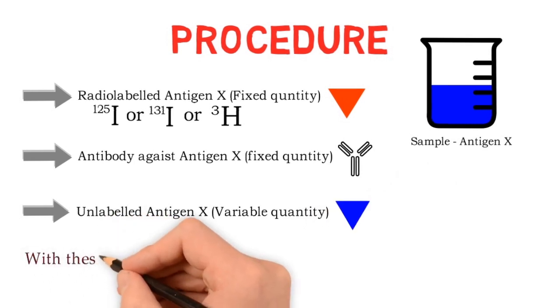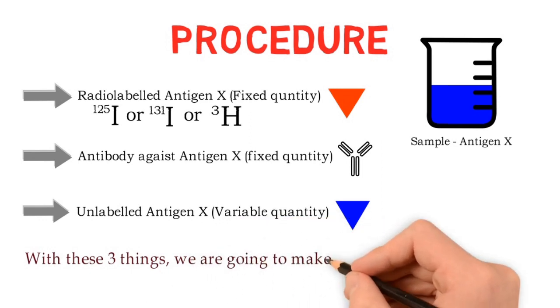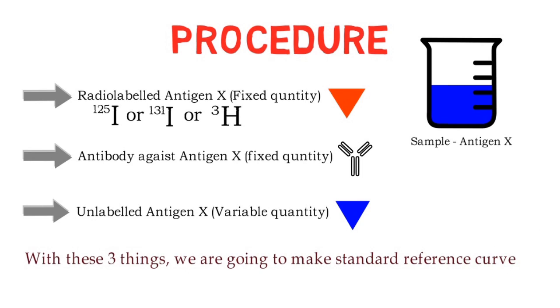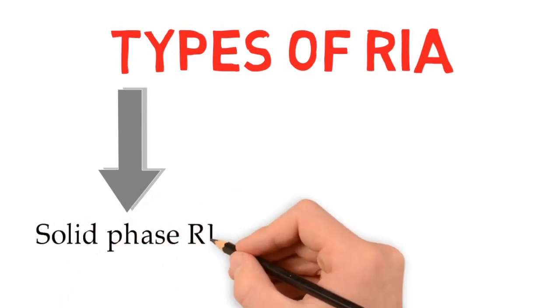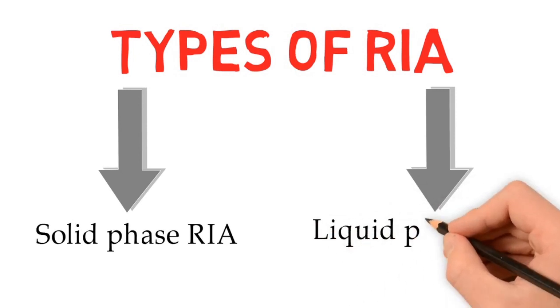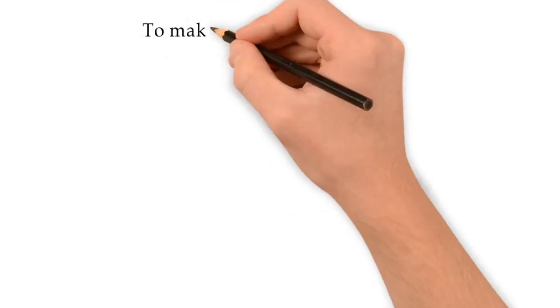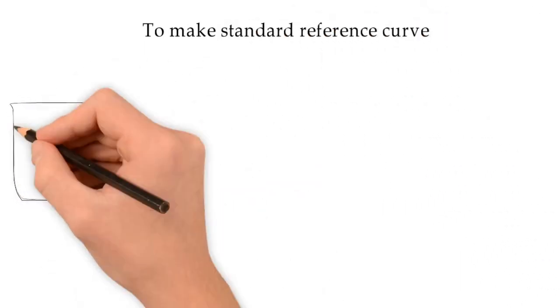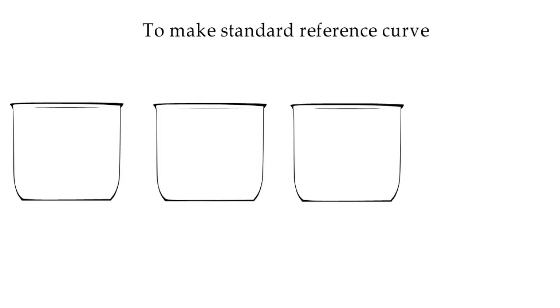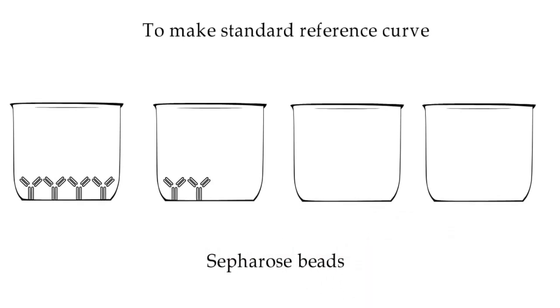With these three things we are going to make standard reference curve. It can be done by two ways. The first one is solid phase radioimmunoassay and second is liquid phase radioimmunoassay. We will see solid phase radioimmunoassay. To make standard reference curve, take series of tubes. Generally sepharose beads are used. Now fixed quantity of antibodies against antigen X are immobilized in sepharose beads which covalently link with it.